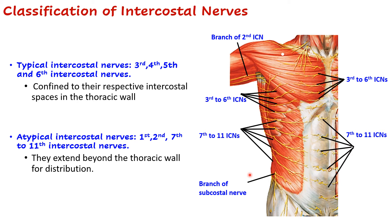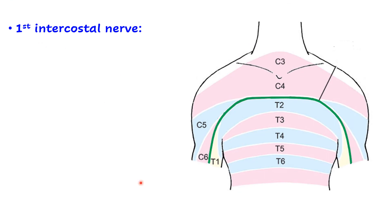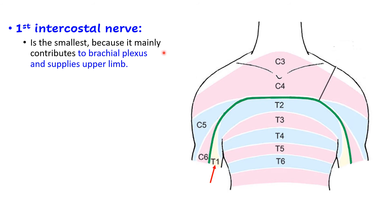The 1st intercostal nerve is the smallest because it mainly contributes to the brachial plexus. Most of it joins the ventral ramus of C8 spinal nerve to form the lower trunk of the brachial plexus, thereby supplying the upper limb. In the thoracic region it supplies only the muscles in the first intercostal space, but it has no cutaneous branch.